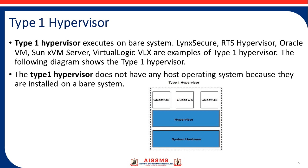The Type 1 hypervisor executes directly on bare metal. Linux Secure RTS Hypervisor, Oracle VM, Sun XVM Servers, Virtual Logic VLX are examples of the Type 1 hypervisor. The Type 1 hypervisor does not have any host operating system because it is installed directly on the system hardware — there is no operating system in between.